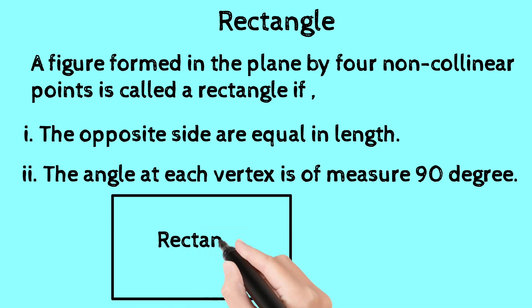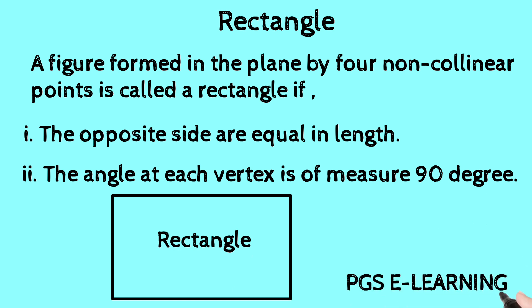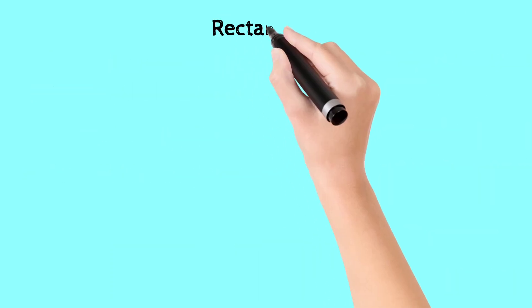Let's see a diagram of a rectangle. It has four sides and internal angles of 90 degrees.